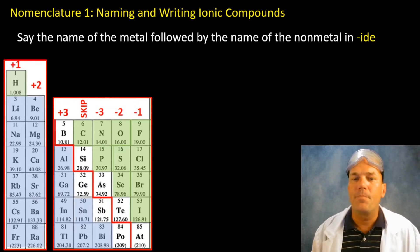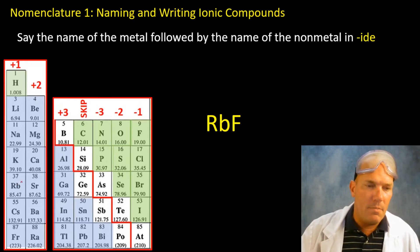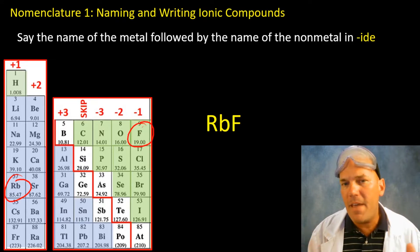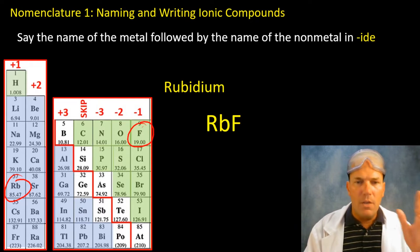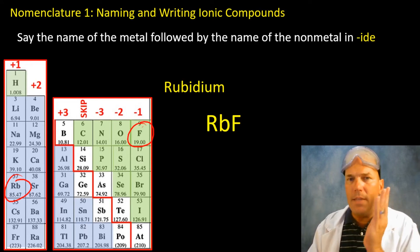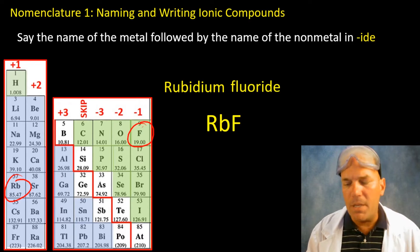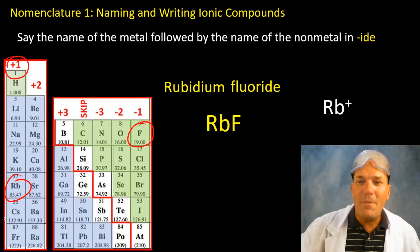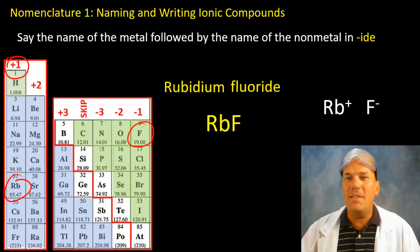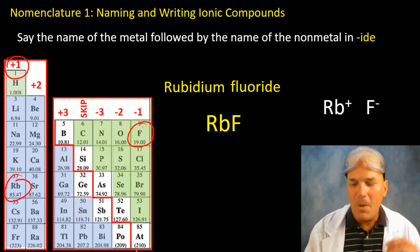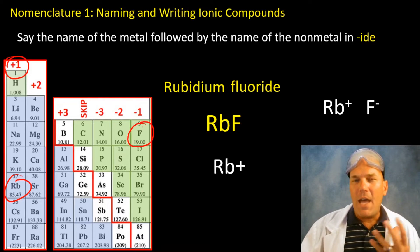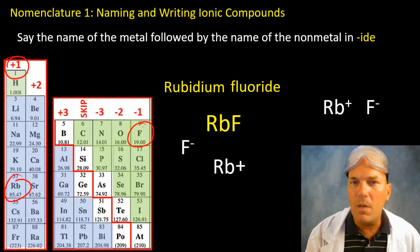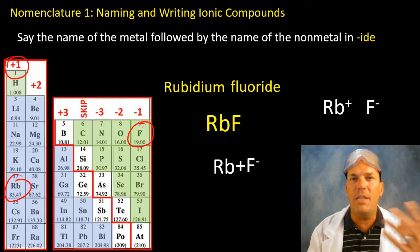Here we have rubidium, a group one metal, and fluorine, another member of the halogen family. We say the metal — rubidium — and the non-metal ending in "-ide" — fluoride: rubidium fluoride. Rubidium has a plus one charge, so does the whole group. Fluorine has a negative one charge, so does the entire family. One rubidium with its plus one and one fluorine with its minus one — they cancel perfectly: rubidium fluoride.